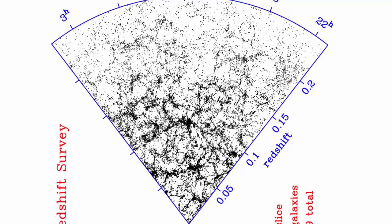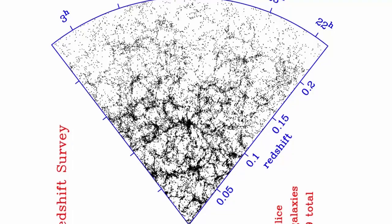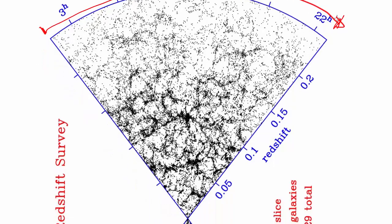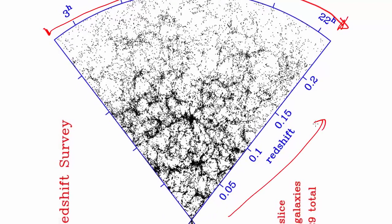We can now produce a slice-of-pizza diagram. Along one side we plot where on the strip the actual galaxy is — from the left-hand edge to the right-hand edge — so this is angle on the sky. On the other axis we plot the redshift measured from each spectrum. Every dot is one of the galaxies. What we've got is a nice slice through the three-dimensional structure. We can see galaxy clusters, filaments extending between them, and voids where there aren't very many galaxies.